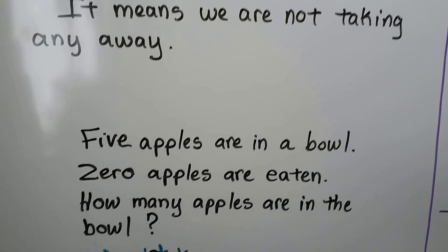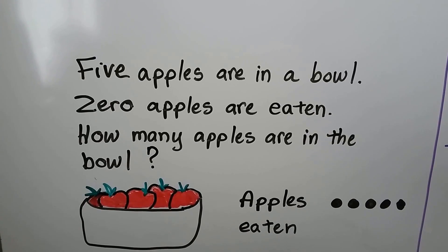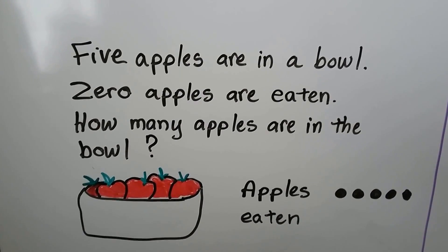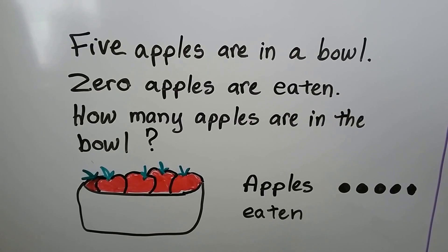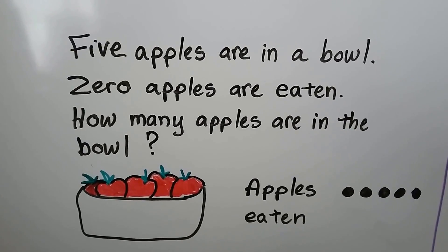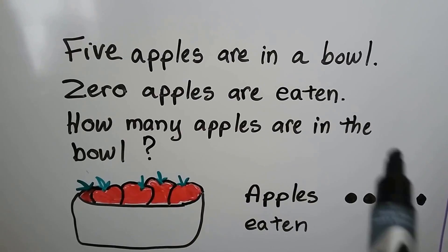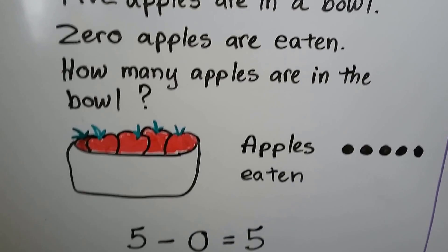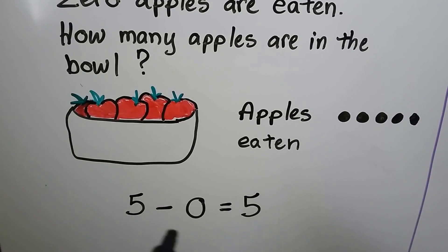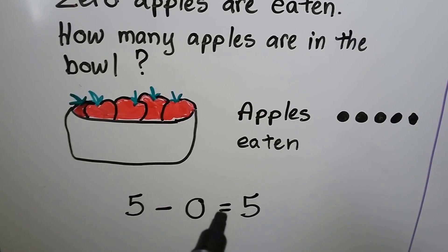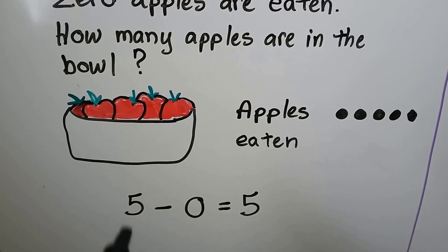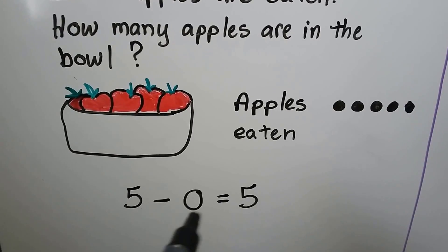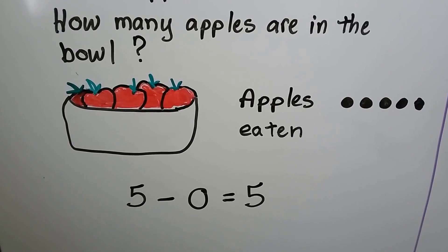Five apples are in a bowl. Zero apples are eaten. How many apples are in the bowl? We can draw dots for the apples — five dots for five apples. Zero are eaten. Five minus zero is equal to five. None were taken away, so there are still five apples in the bowl.